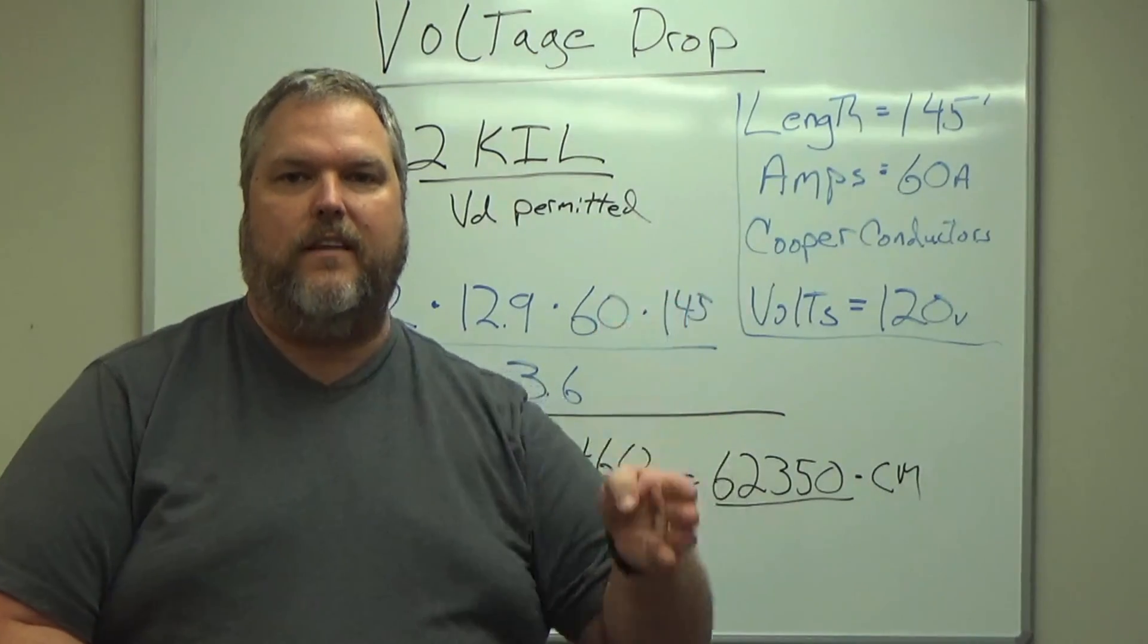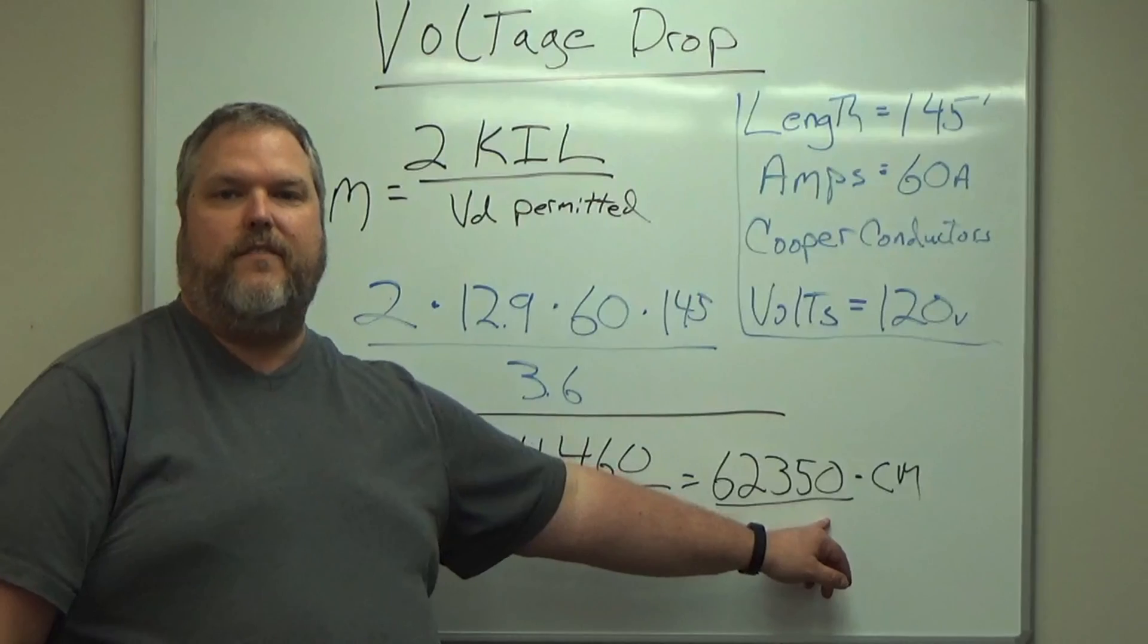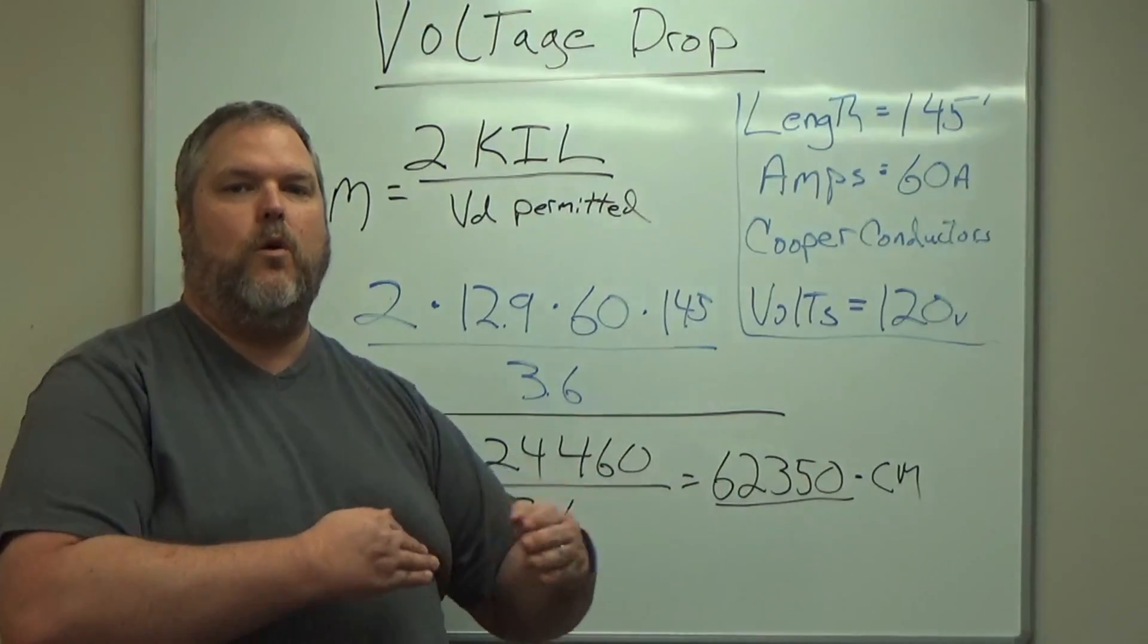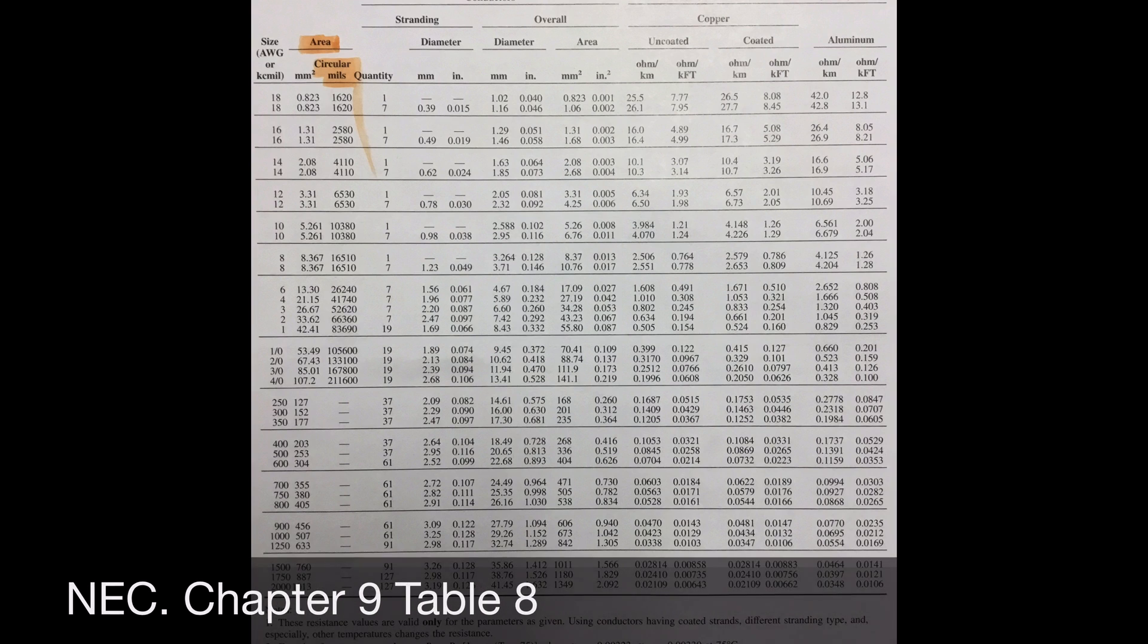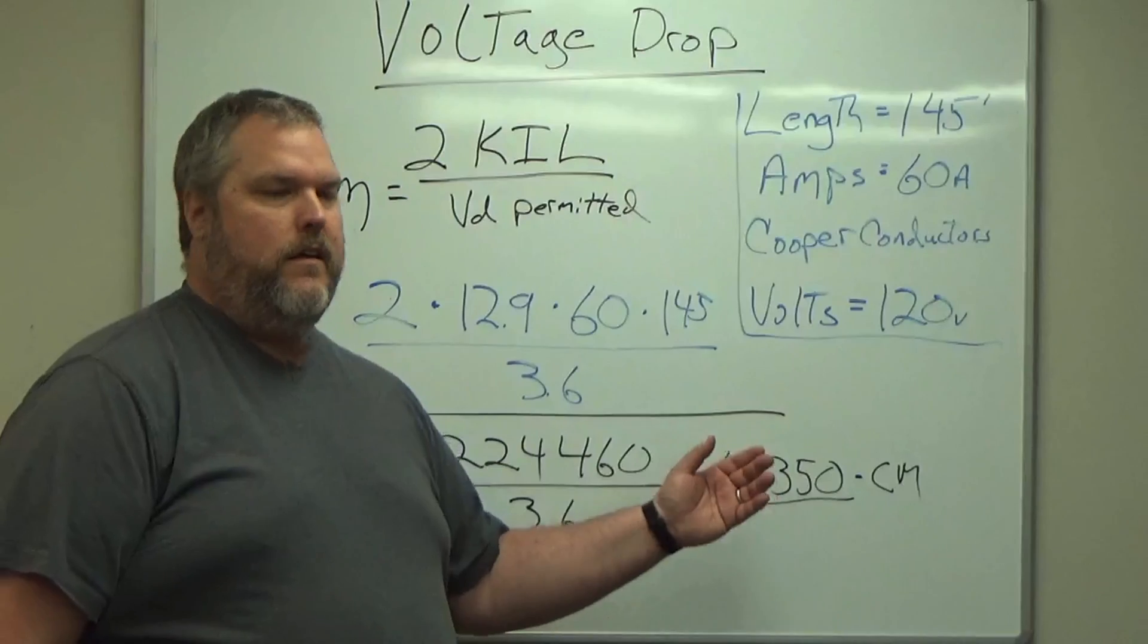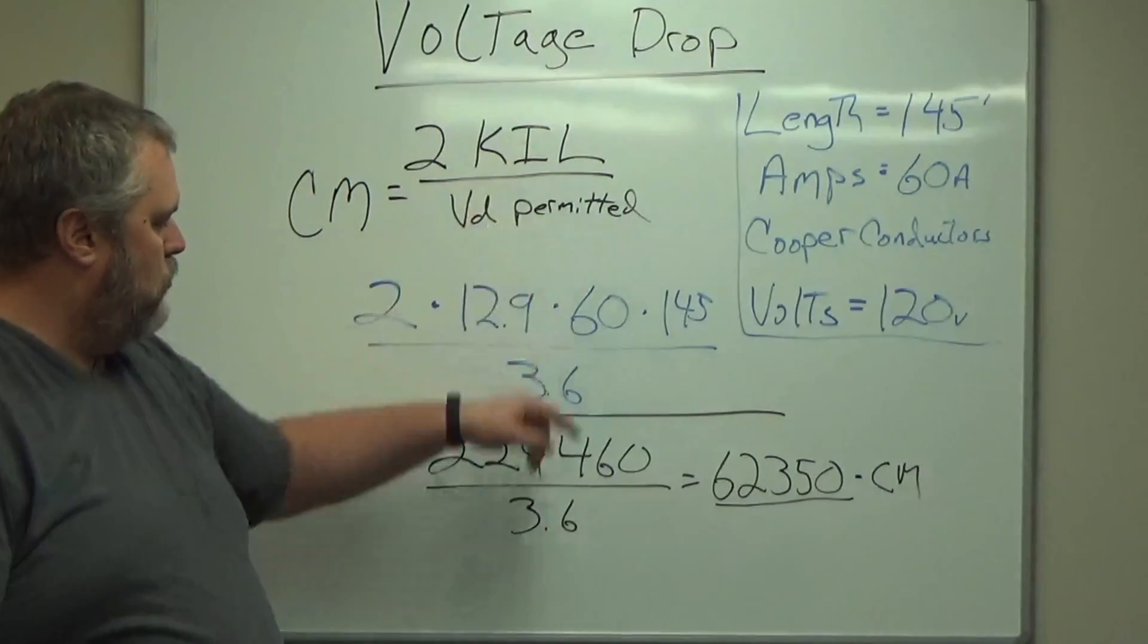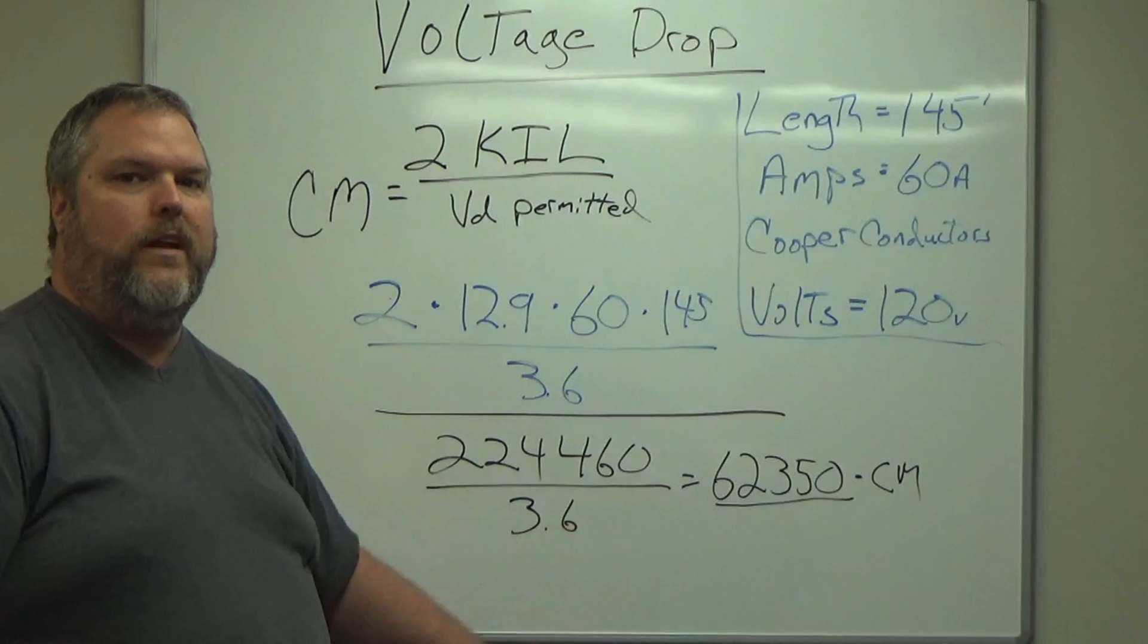Now we just have to refer back to chapter 9, table 8. We're going to find the area. We're going to follow it all the way down until we find 62,350 or somewhere there in between. And as you can see, in order to make this work, to get this voltage drop to be at 3.6, we need to run a number two.